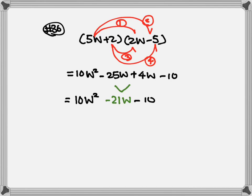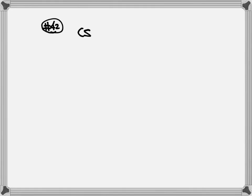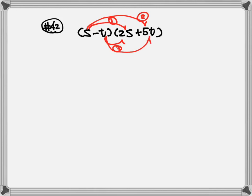Next, let's look at number 42. We have S minus T times parenthesis of 2S plus 5T. Again, use the FOIL method. Step 1: S times 2S becomes 2S squared. Step 2: S times 5T becomes plus 5ST. Step 3: negative T times 2S will be negative 2ST. I always go by the alphabet — RST — so S comes before T, so we keep it in the same order as ST.